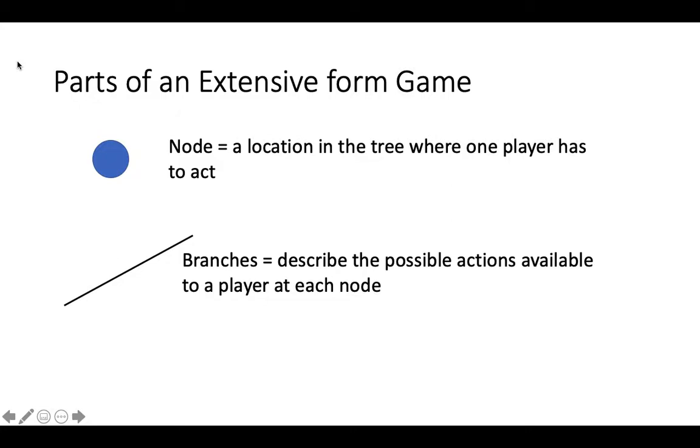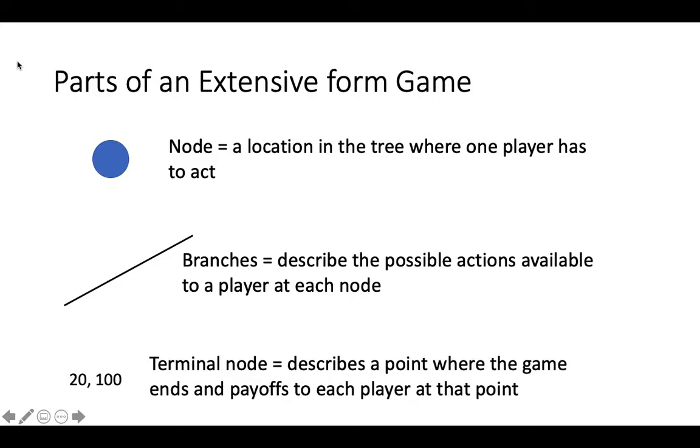The second piece are branches. Branches describe the possible actions that a player can choose at each node. The third piece of an Extensive Form Game is the terminal node. Terminal nodes describe an endpoint of a game and list the payoffs to each player at that endpoint. A game can have, and usually does have, more than one terminal node.